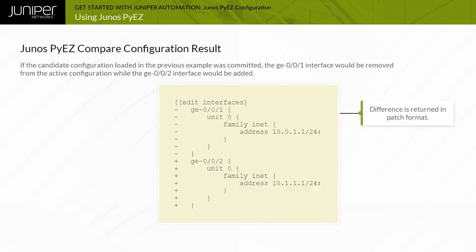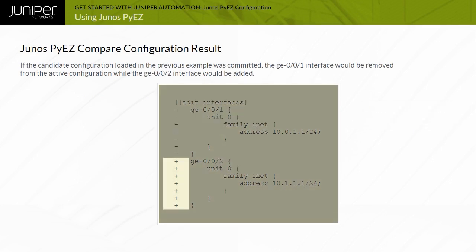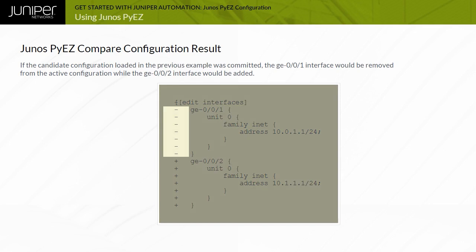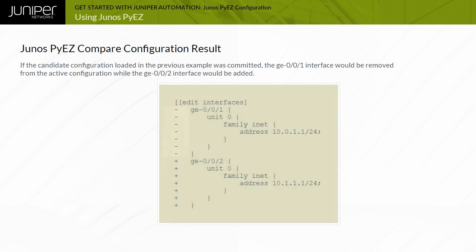The configuration difference information generated by Junos PyEasy is returned in the Junos patch configuration format. Configuration statements preceded by a plus symbol exist in the candidate configuration and not the comparison active or rollback configuration. Statements preceded by a minus symbol exist in the active or rollback configuration and not the candidate configuration.